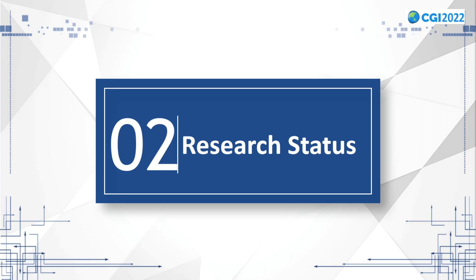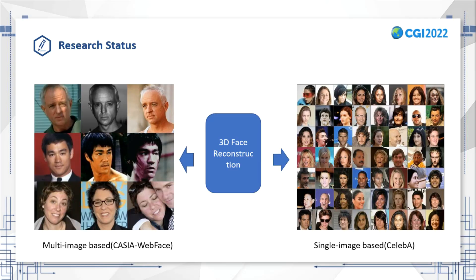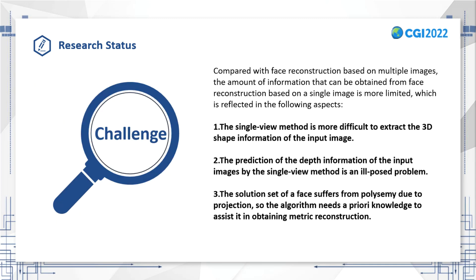The second part. Before we dive in, we need to know that research methods of 3D face reconstruction can be divided into methods based on multiple images and methods based on single images. The multiple-image-based approach can obtain information from multiple angles of the face and has better accuracy and robustness, while the single-image-based reconstruction method is more convenient, fast, easy to implement, and therefore has a broader prospect. At the same time, it also faces many challenges.